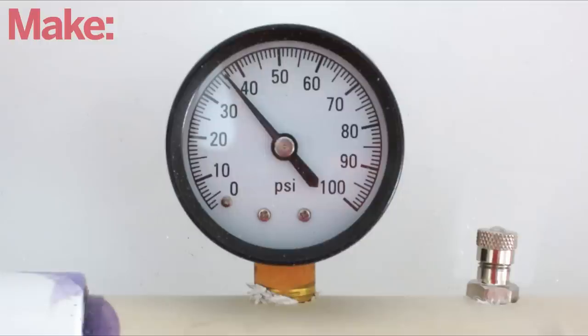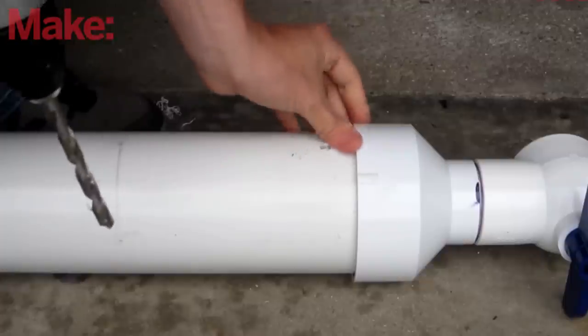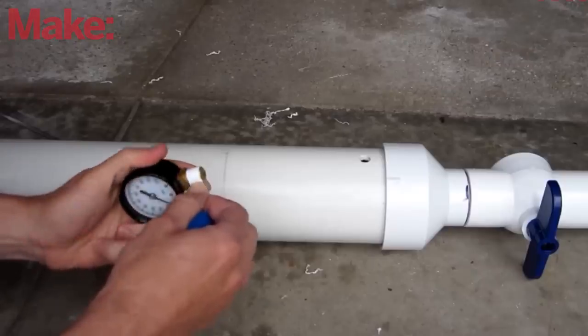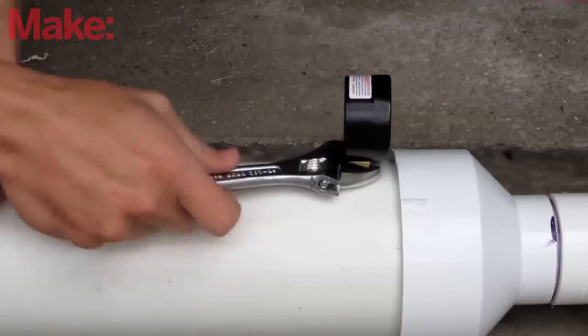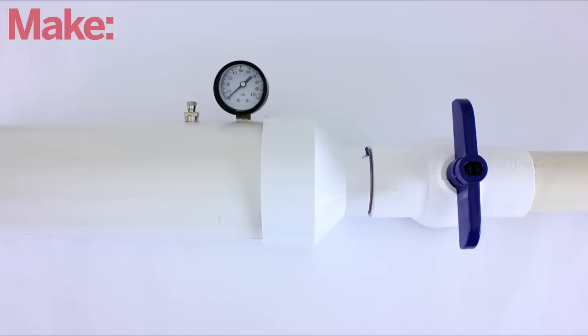The last two parts that we need to add are the air valve and the pressure gauge. Make a hole in the side of the air tank that's a little smaller than the threads on the pressure gauge. Then wrap the threads in plumber's tape and carefully screw them into the hole. Repeat this for the air valve.